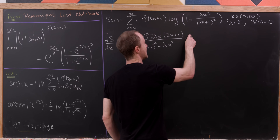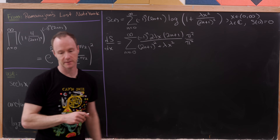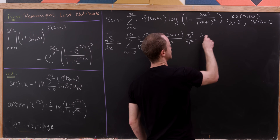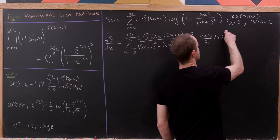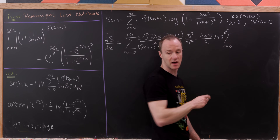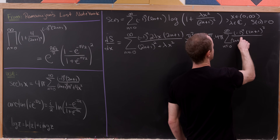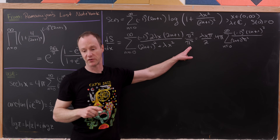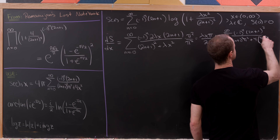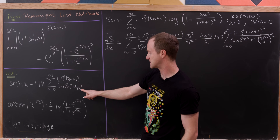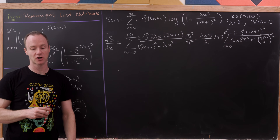Multiply through by pi^2 over pi^2 to make this look like our hyperbolic secant series. We can now write s'(x) as [pi*sqrt(lambda)*x / 2] times [4/pi] times the sum as n goes from 0 to infinity of (-1)^n (2n+1)^2 over [(2n+1)^2 pi^2 + 4*(pi*sqrt(lambda)*x/2)^2]. Applying the hyperbolic secant formula directly gives s'(x) = [lambda*x*pi / 2] times sech(pi*sqrt(lambda)*x / 2).